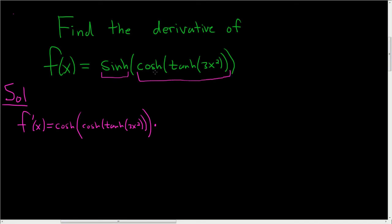The derivative of cosh is sinh. So it's sinh of the hyperbolic tangent of 3x squared, times the derivative of the inside.